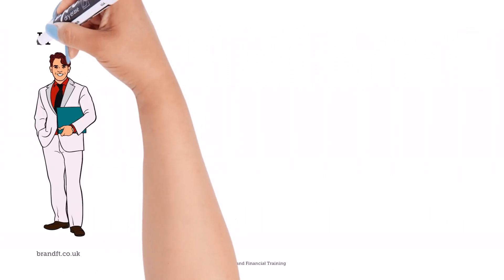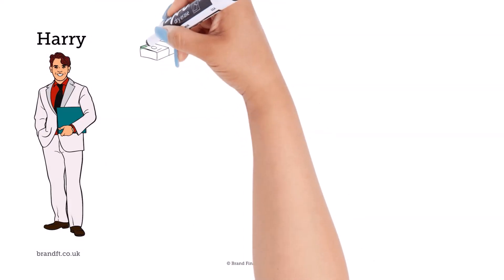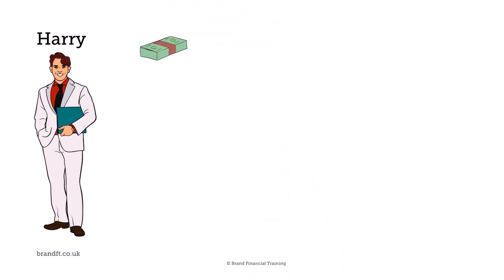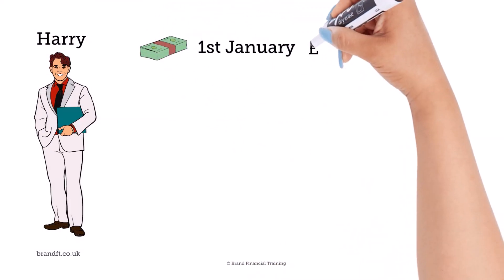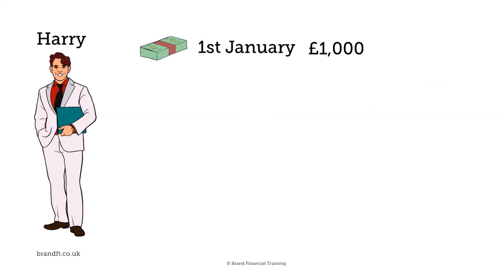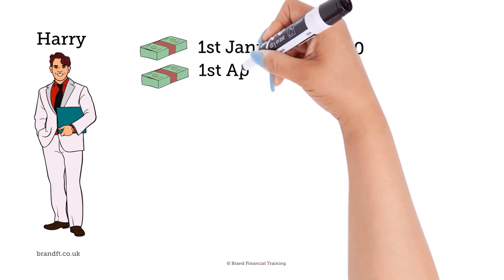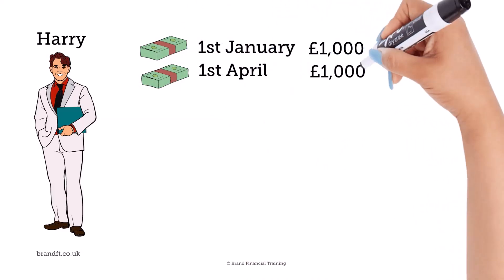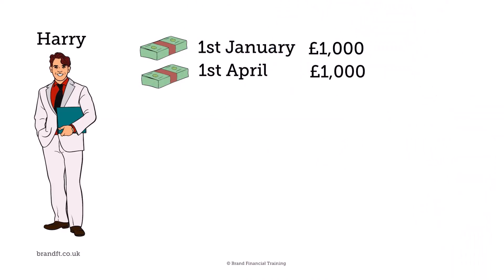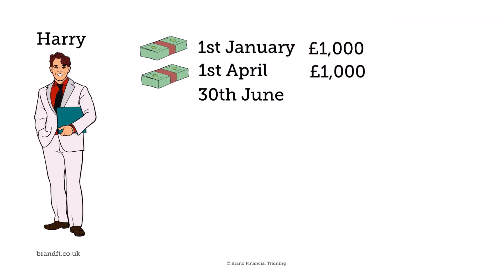Let's take a look at an example. Harry invests £1,000 into his stocks and shares ISA on the 1st of January. By the 1st of April, it's worth £1,200, so Harry invests a further £1,000. By the end of June, the ISA is worth £2,400.